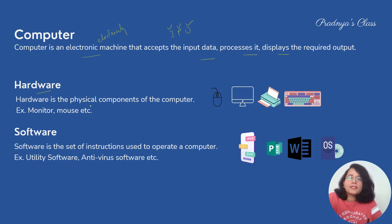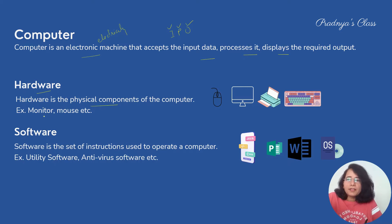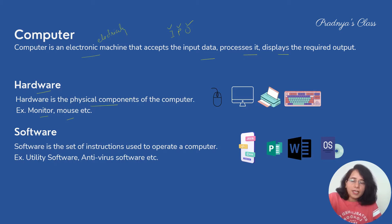Next, let's understand what is hardware. Hardware are the physical components of the computer. Some of the hardware devices are monitor and mouse. We can see it, we can touch it, and we can feel it.